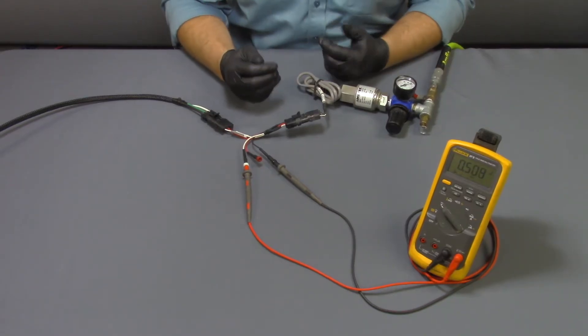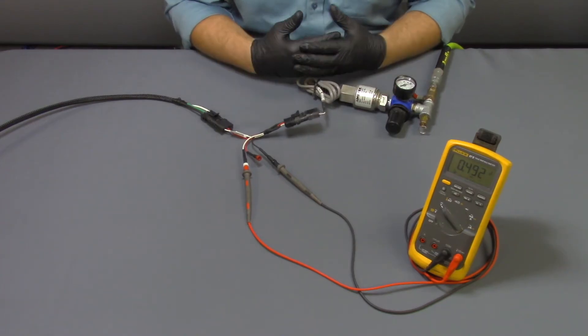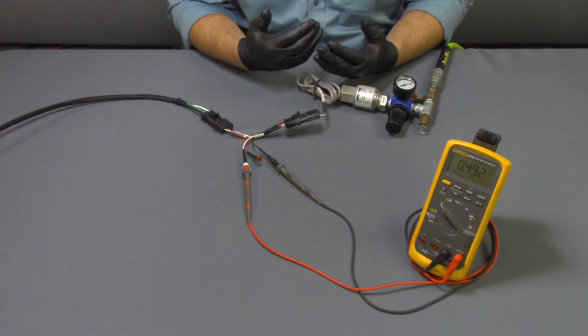If your voltmeter does not change or if it has one constant setting, that is a likely case that your pressure sensor has gone bad.